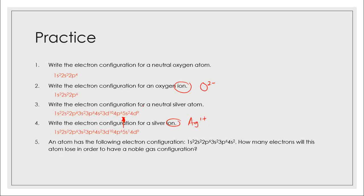Last question: an atom has the following electron configuration — how many electrons will it lose in order to have a noble gas configuration? What do all noble gases end with? They end with p6. So how many electrons will this atom want to lose? It's going to want to lose two electrons.